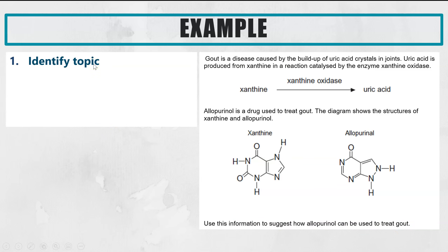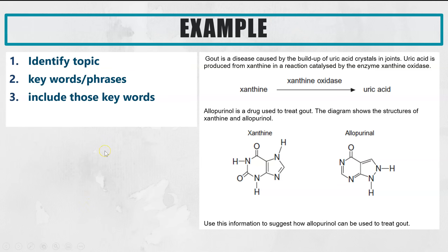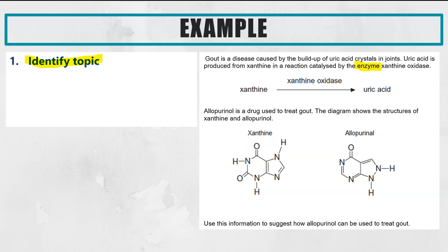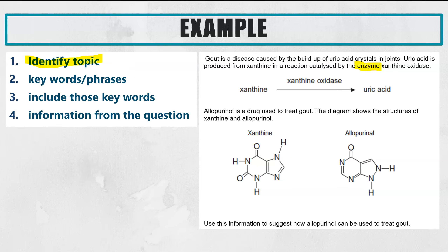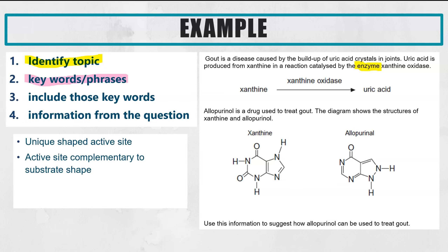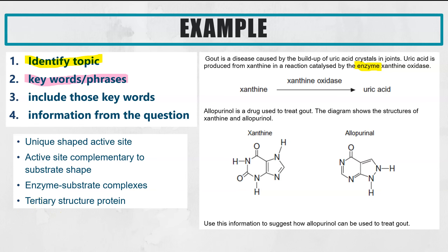So the first thing is to identify the topic this unknown information links to, then the keywords linked to that, then how you'd use those in the question, and which bit of information from the question you're going to use. Looking at the question, this is an enzymes question — we've got information to do with enzymes. Then we go through the keywords and phrases linked to enzymes: unique shaped active site; the active site is complementary to the substrate shape; enzyme substrate complexes — that one is key, there's always a mark for correctly using that phrase in an enzyme question; and tertiary structure protein.